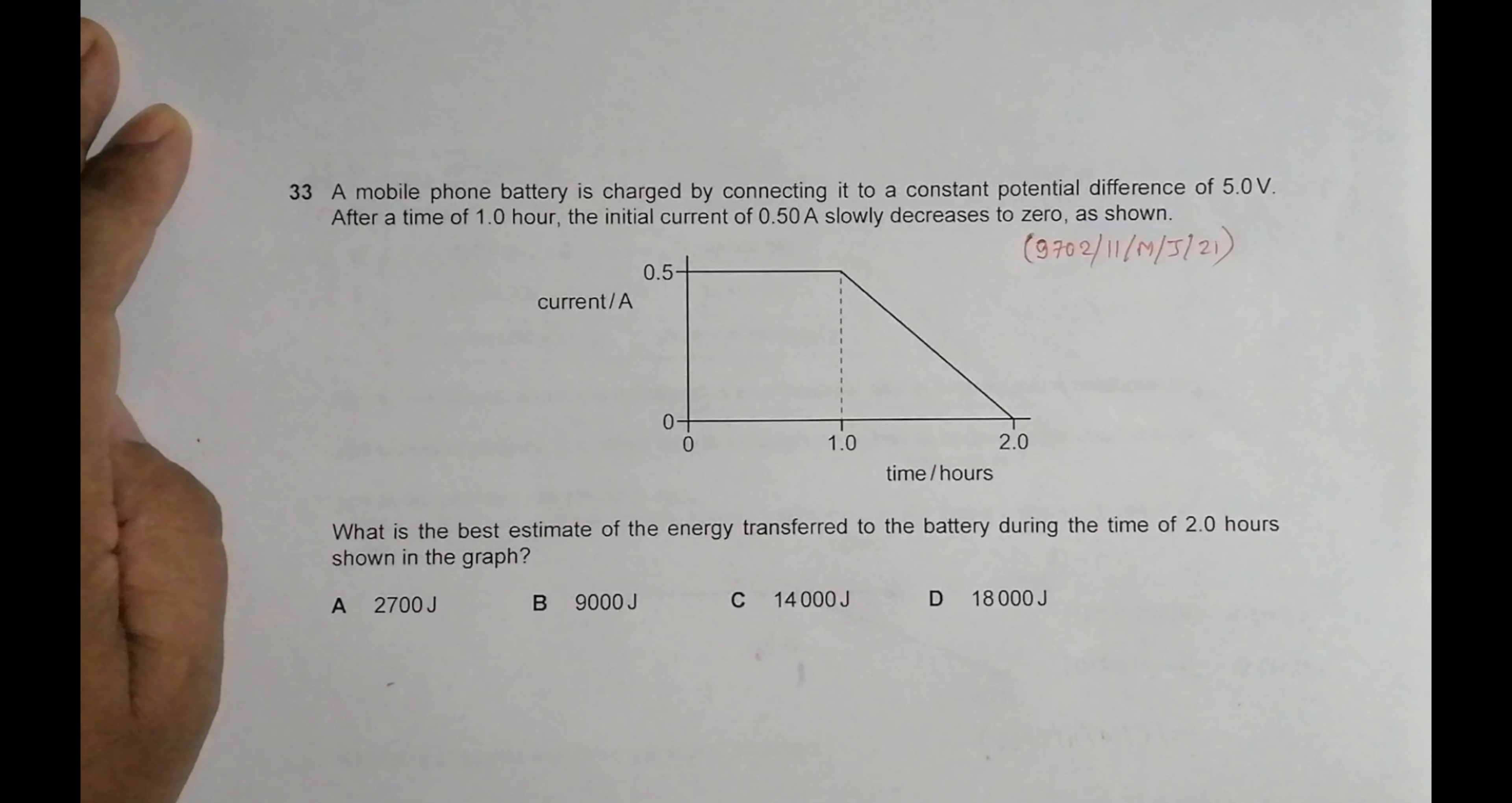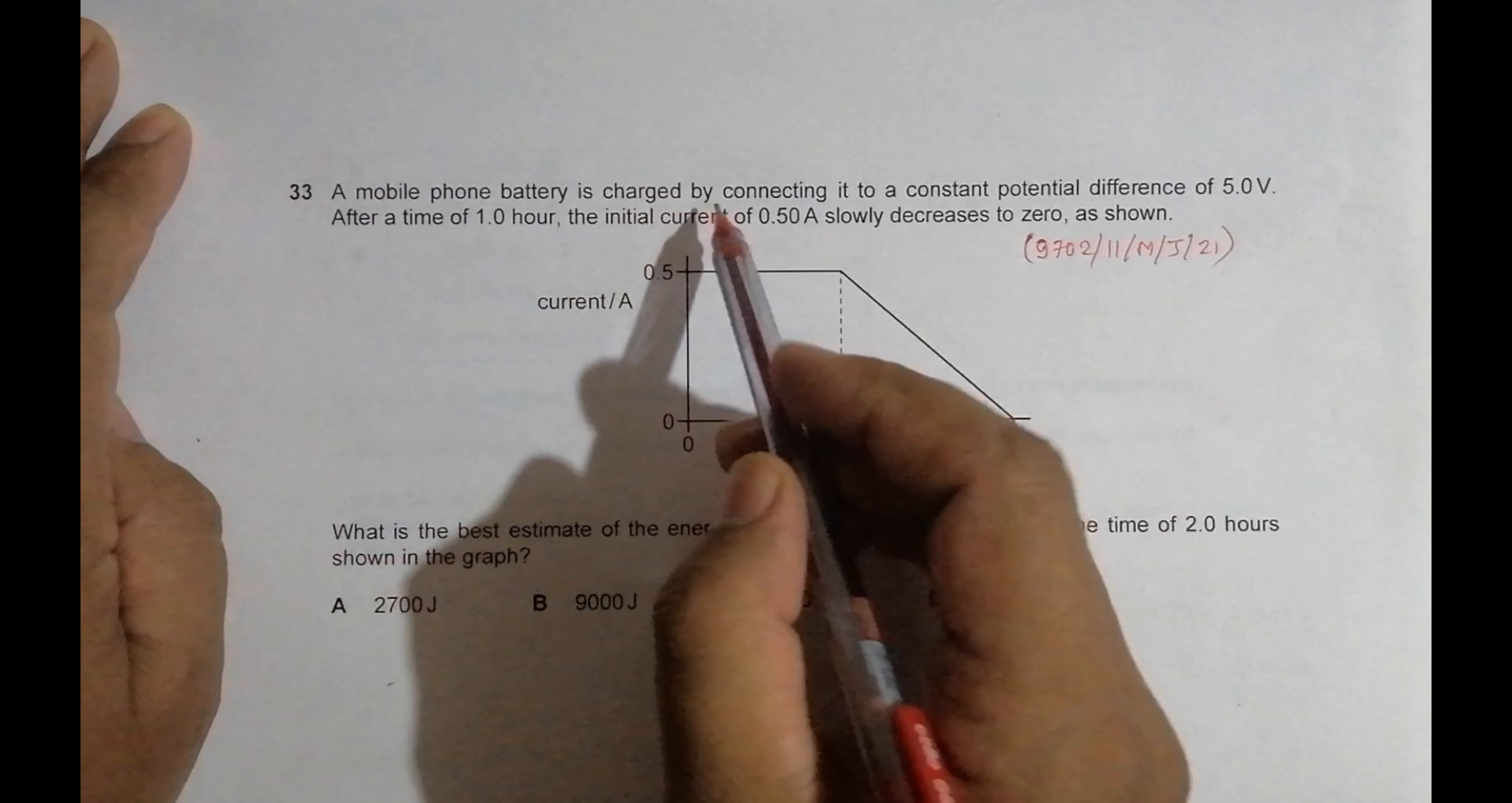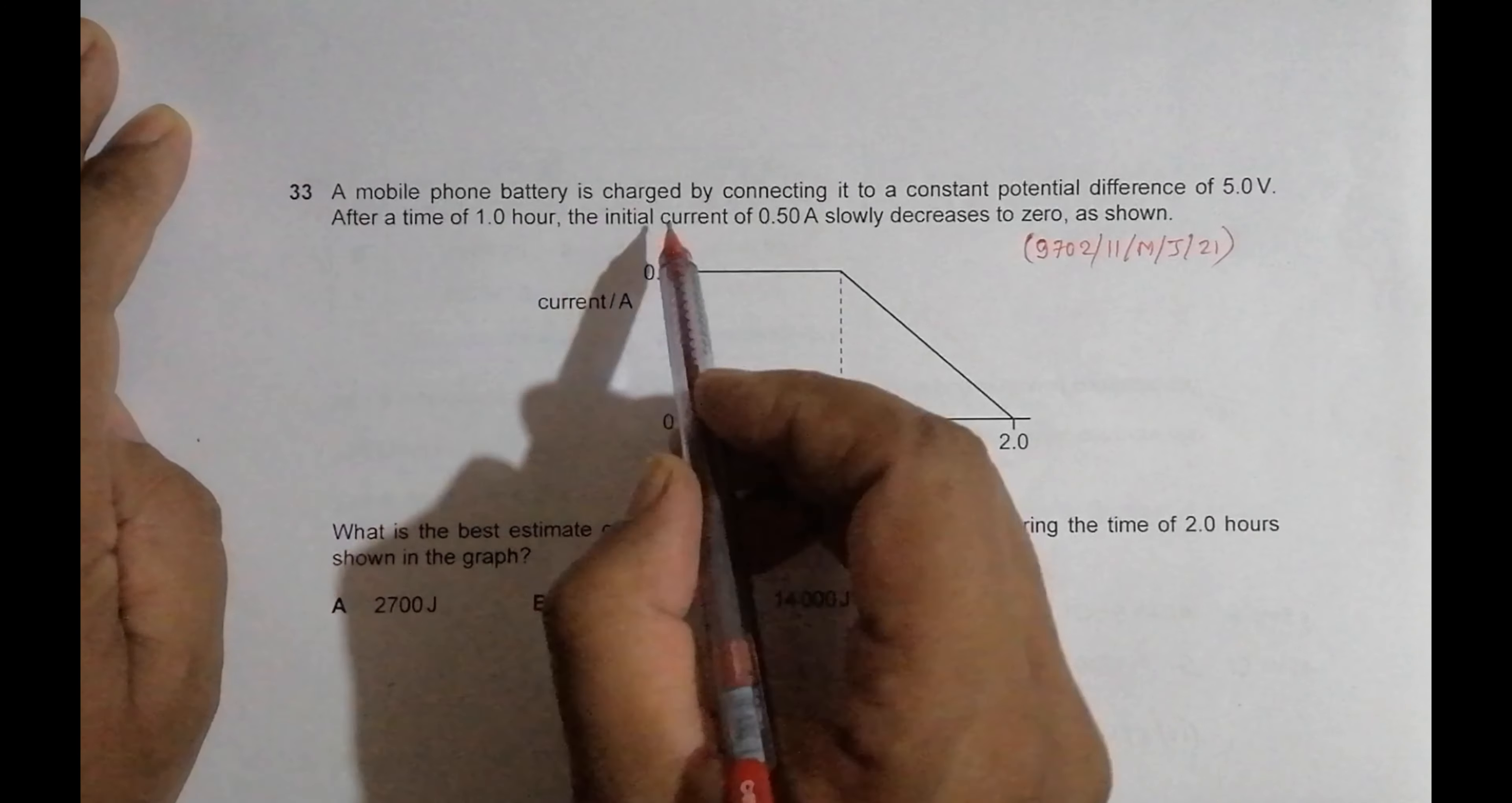As evident from the question, it belongs to current electricity. It says that a mobile phone battery is charged by connecting it to a constant potential difference of 5.0 volts. After a time of 1.0 hour, the